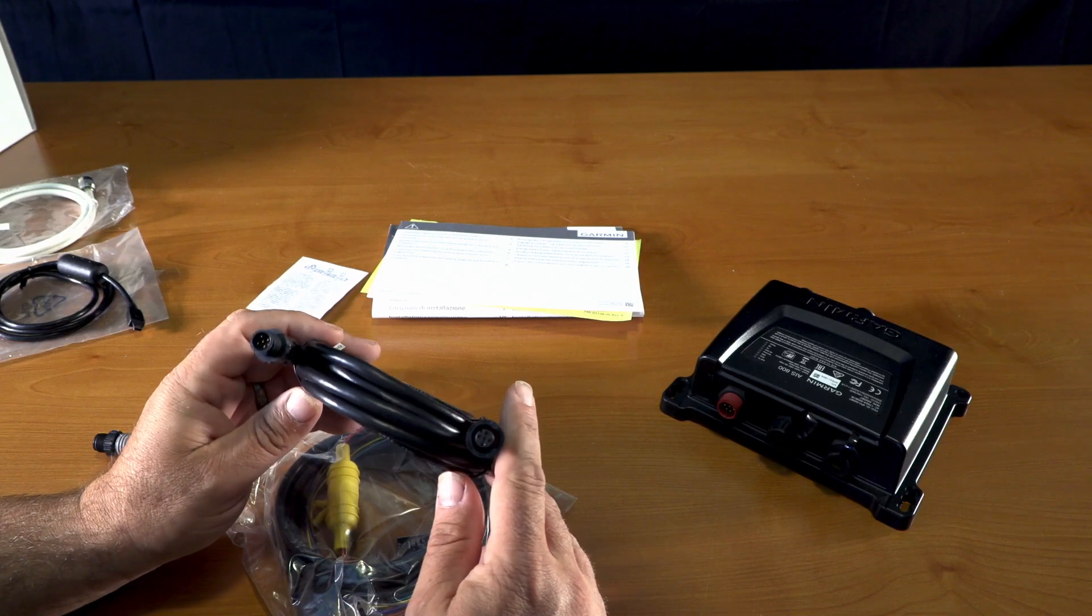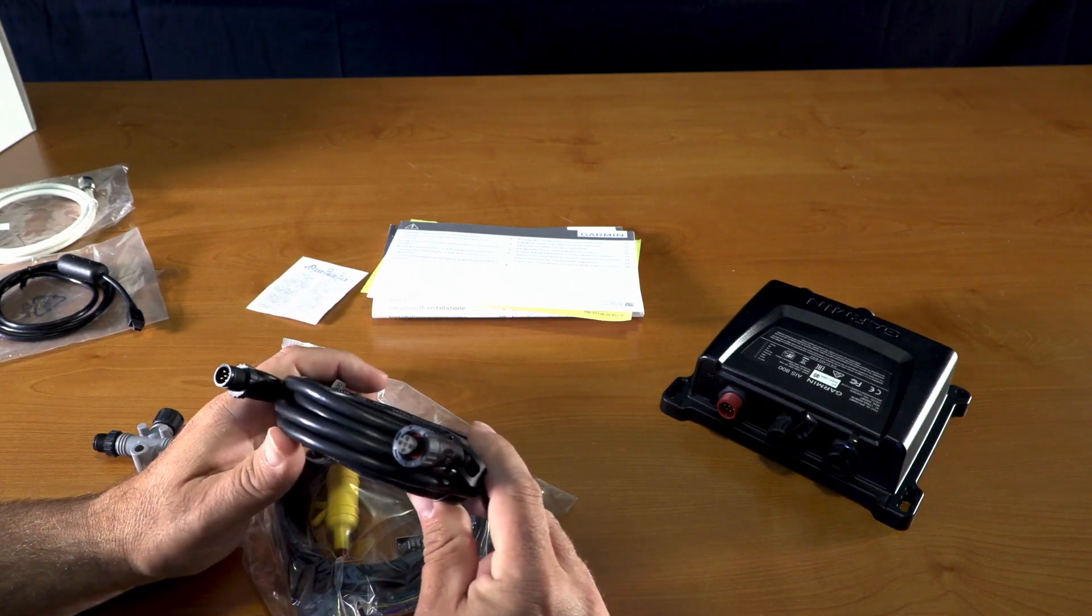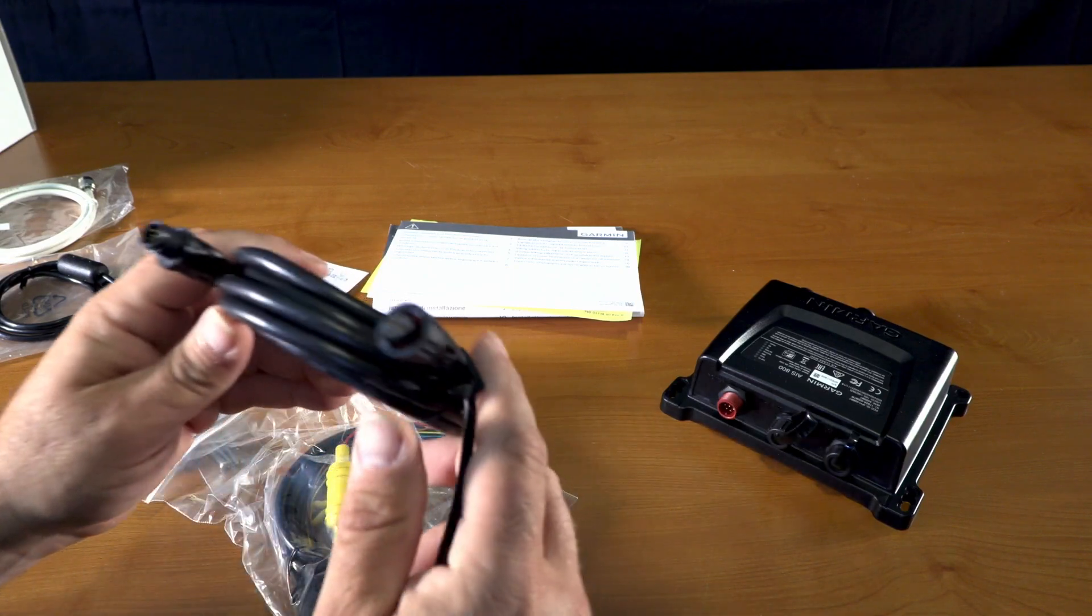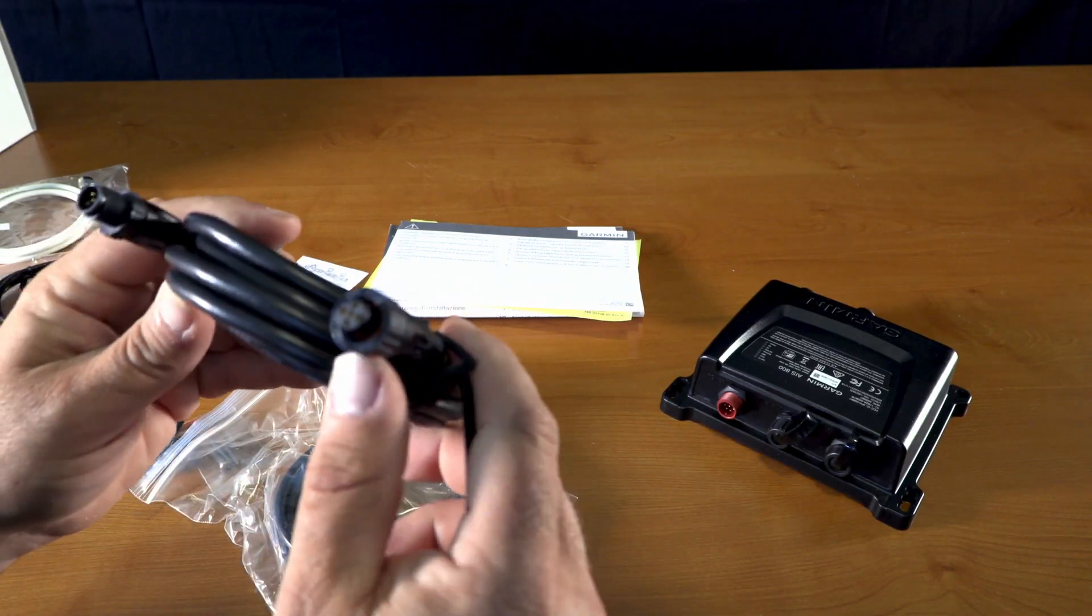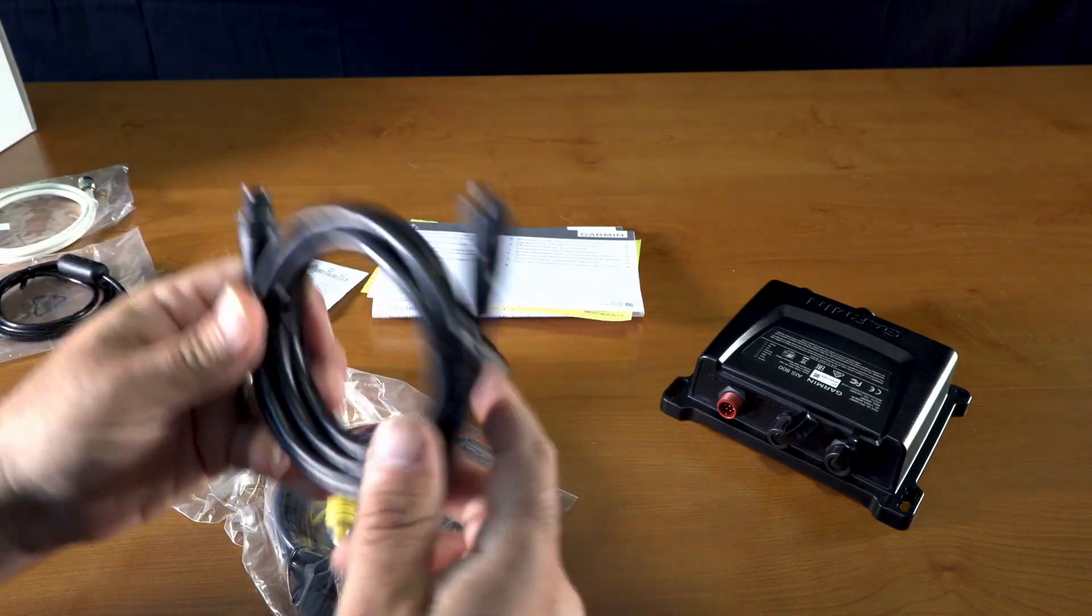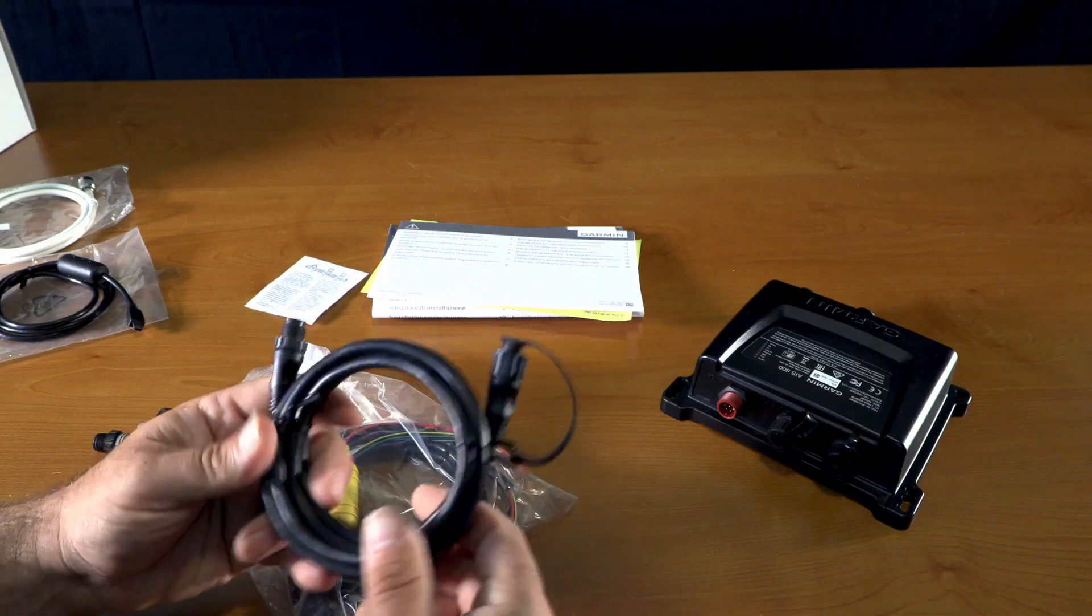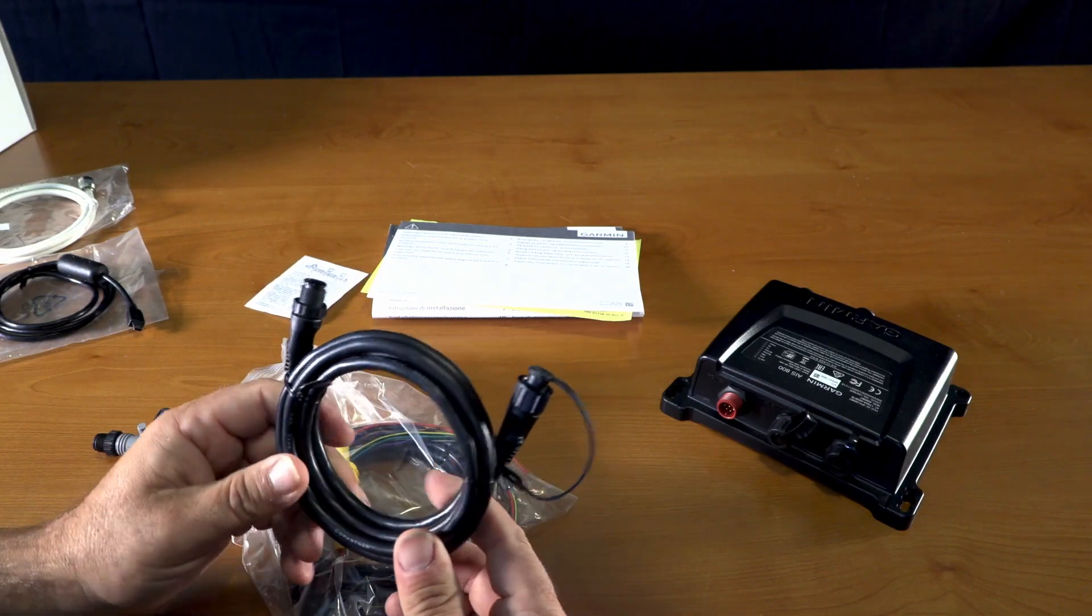Alright, here's your NMEA 2000 cable. It's got the weather pack connectors, 5-pin. Looks like about a six and a half foot cable.